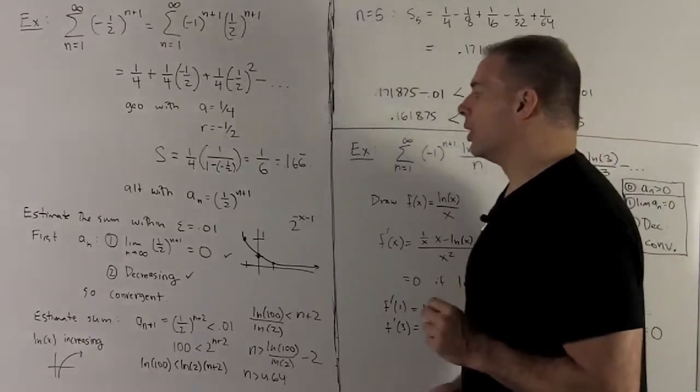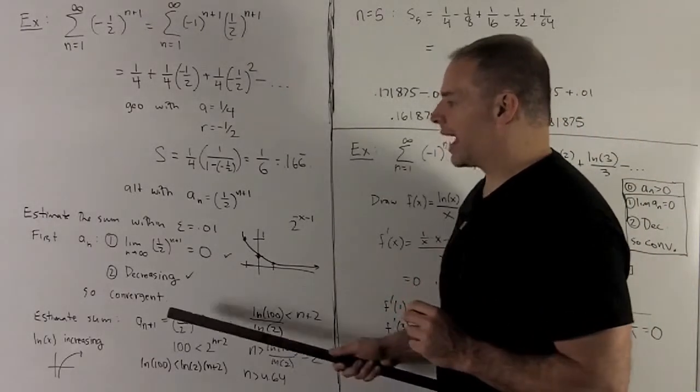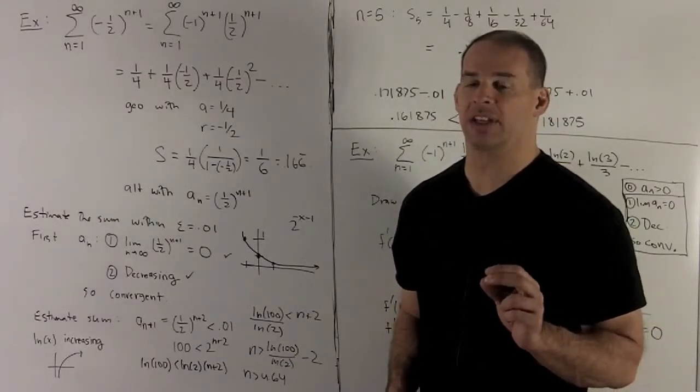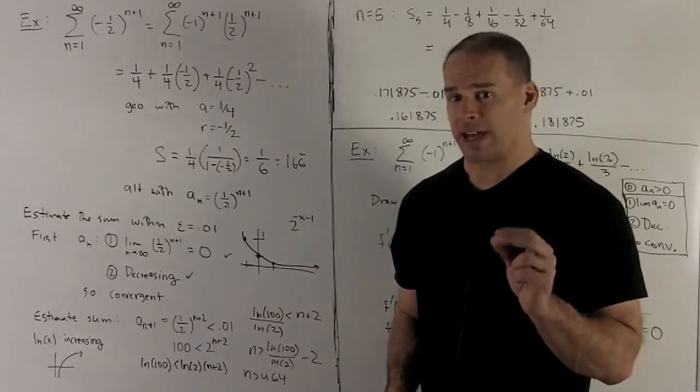Now I want to estimate the sum. We already know the sum, but let's see how our estimate works using the alternating series test and the way we get the estimate off of that.